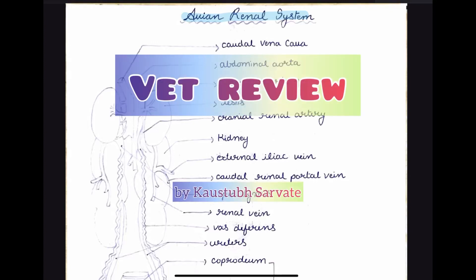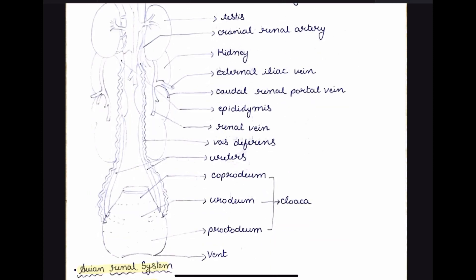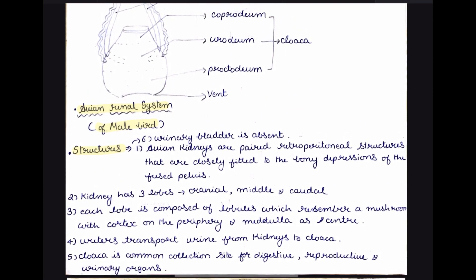In this video I am going to talk about the avian renal system or avian excretory system. The important points to remember about the avian renal system: the avian kidneys are paired retroperitoneal structures closely fitted to the bony depressions of the fused pelvis. The kidney has three lobes — cranial, middle, and caudal. Each lobe is composed of lobules which resemble a mushroom-like structure with cortex on the periphery and medulla in the center.